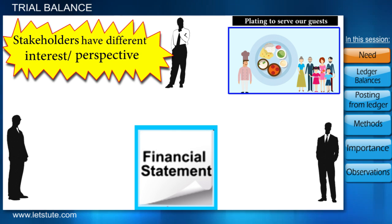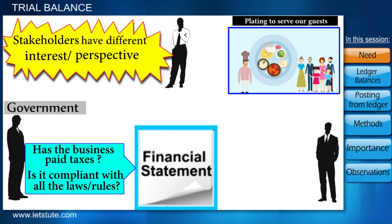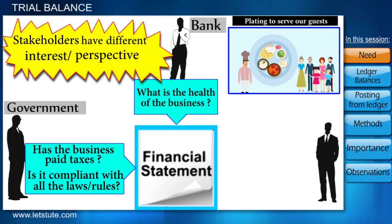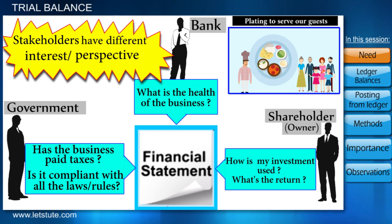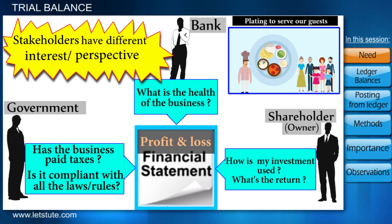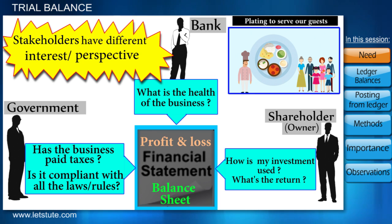Different stakeholders are interested from different perspectives. For example, the government would be interested in seeing that you've paid taxes. Banks would want to know the overall health of the business through the statements so they can make a decision about lending a loan. Shareholders would like to know where their invested amount is being used, how much return on investment or dividend is going to be distributed. Overall, they are all concerned with the profit and loss and the statement of assets and liabilities to know the financial health of the business.